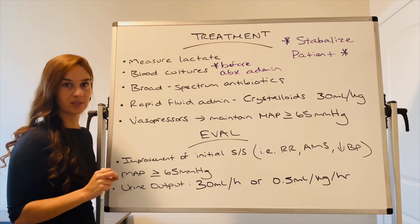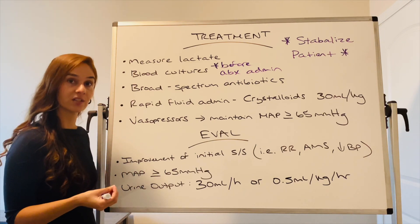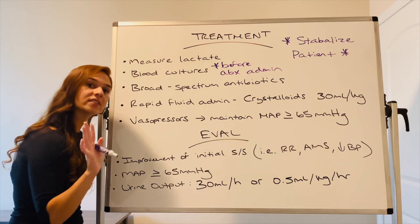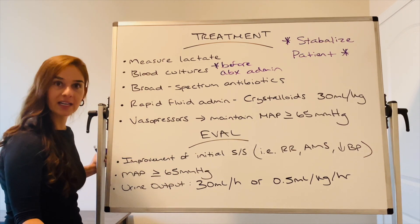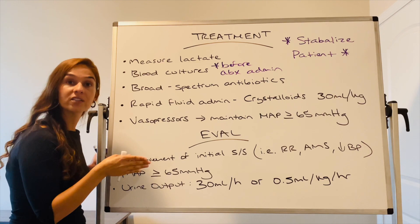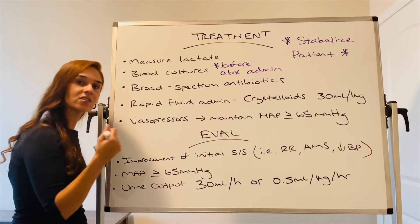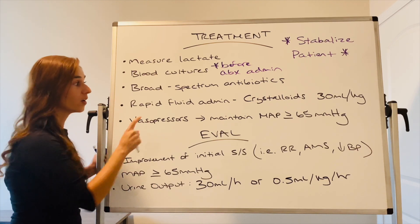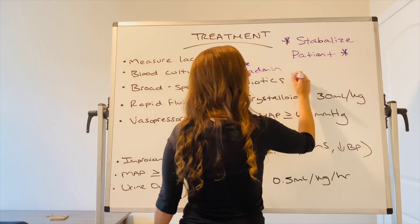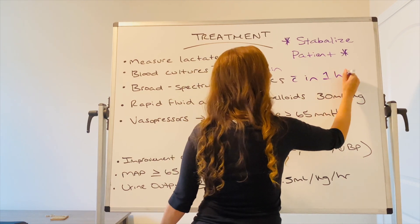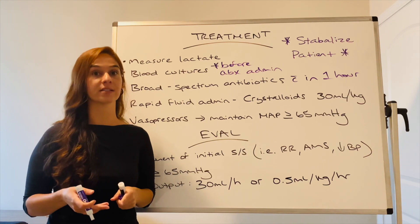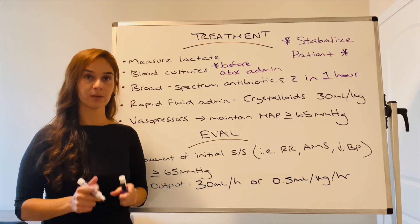Now we will administer broad-spectrum antibiotics. This is a little different from what you've been taught — you're always taught to get the culture and sensitivity so you know what antibiotic to give. We don't want to treat an infection with an antibiotic we haven't identified the source for, because we don't want antibiotic resistance such as MRSA or C. diff. However, we will start a broad-spectrum antibiotic within one hour — that's our goal. Evidence has proven that for every hour delay in getting them an antibiotic, their mortality rate increases. So we go ahead and start that antibiotic because we know it improves their outcomes.